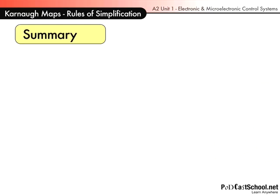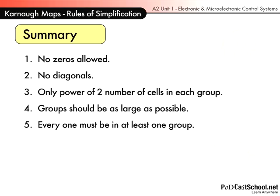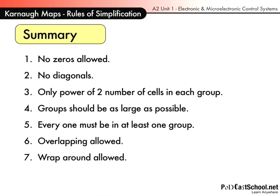So in summary then, you're not allowed to group zeros. You cannot have diagonals. You must have a power of two. In other words, it must be one, two, four, or eight cells in each group. Groups should be as large as possible to obtain the minimal expression. Every one must be in at least one group. You can overlap, and you are allowed to wrap around, that you are allowed to wrap the table around, or the Karnaugh Map around. That's quite an interesting one.